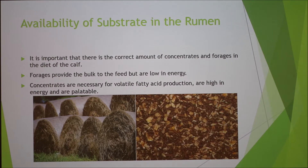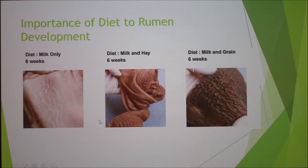The availability of substrates is very important, and the correct amounts are very important as well. Forages provide bulk to the feed but are low in energy for calves, while concentrates are needed for volatile fatty acid production, are very high in energy, and are palatable. A milk-only diet shows virtually no rumen development, milk and hay shows slight development, but in contrast milk and grain shows dramatically greater development.